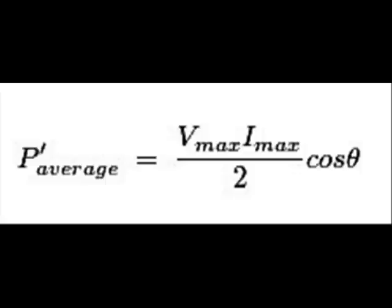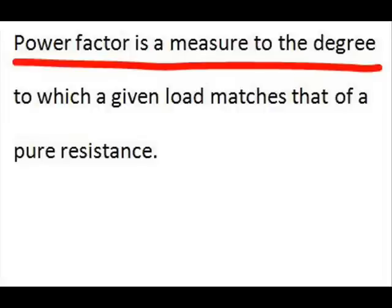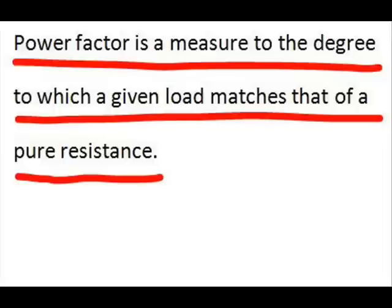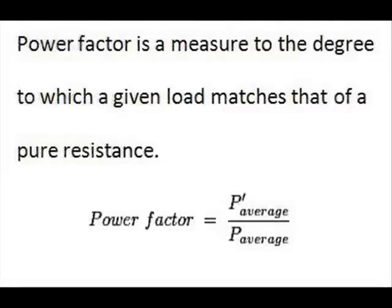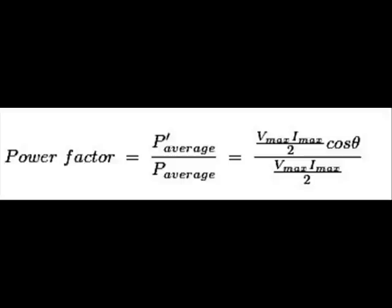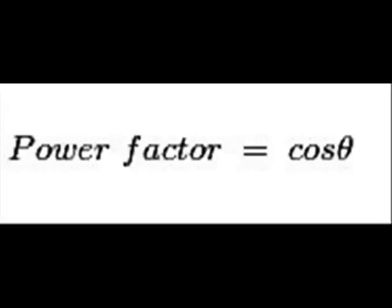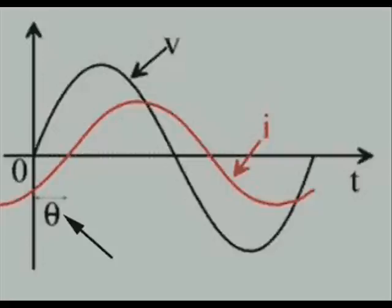So far, we have calculated the average power of a purely resistive load and an arbitrary load with the same sinusoidal voltage and current with the same magnitude peak. Now, the power factor is a measure of the degree to which a given load matches that of a pure resistance. It can be considered as the ratio of the average power of an arbitrary load to the average power of a purely resistive load, for the same sinusoidal voltage and current with the same magnitude peak. Hence, power factor = (Vmax·Imax/2·cosθ) / (Vmax·Imax/2) = cosθ. Power factor is defined as the cosine of the angle between voltage and current in any load, and this is true only for sinusoidal alternating signals.